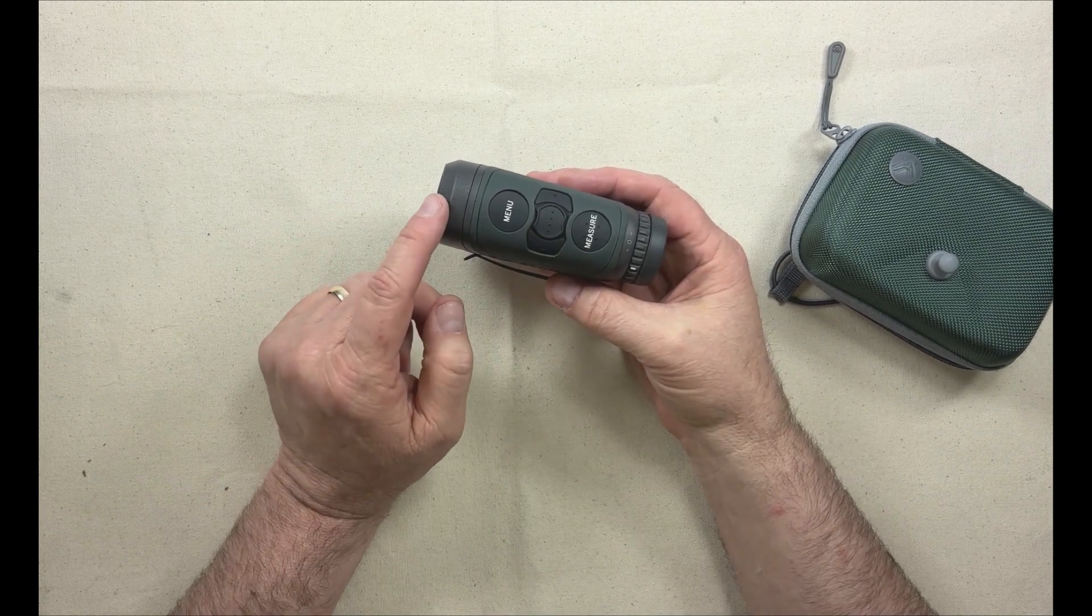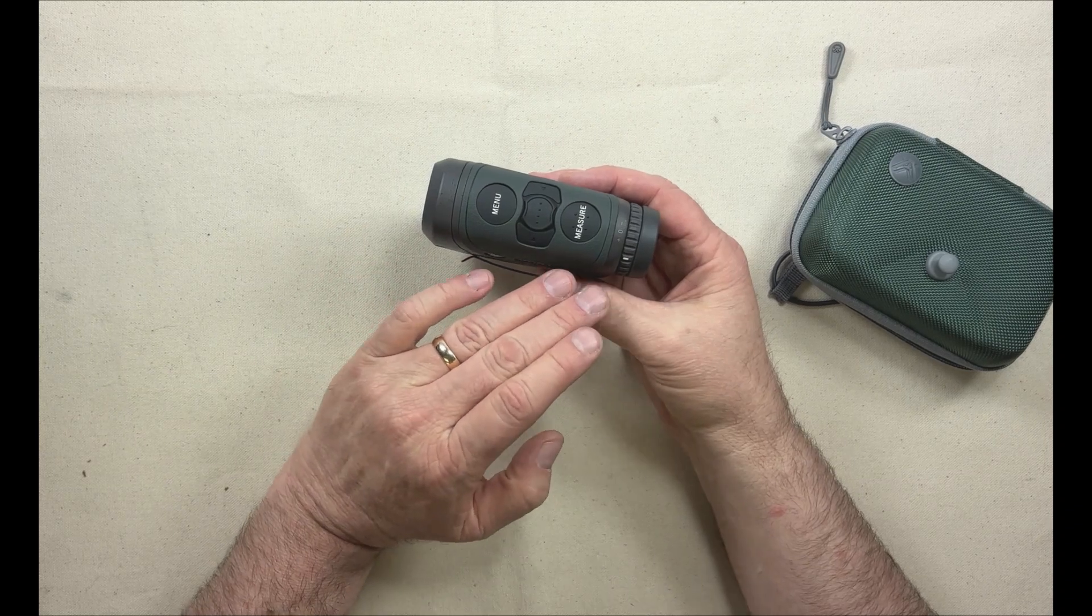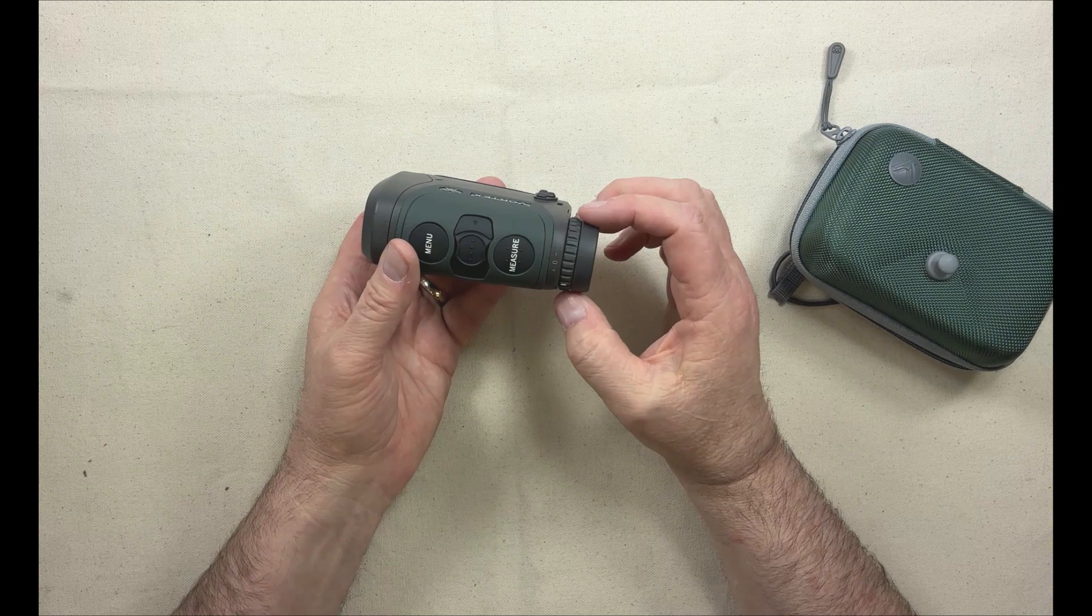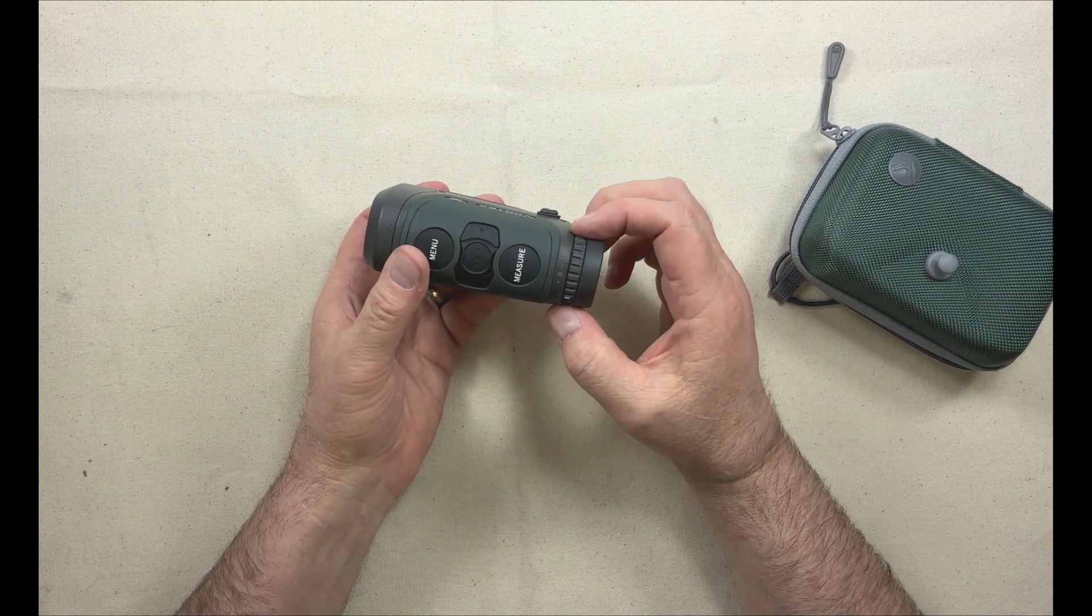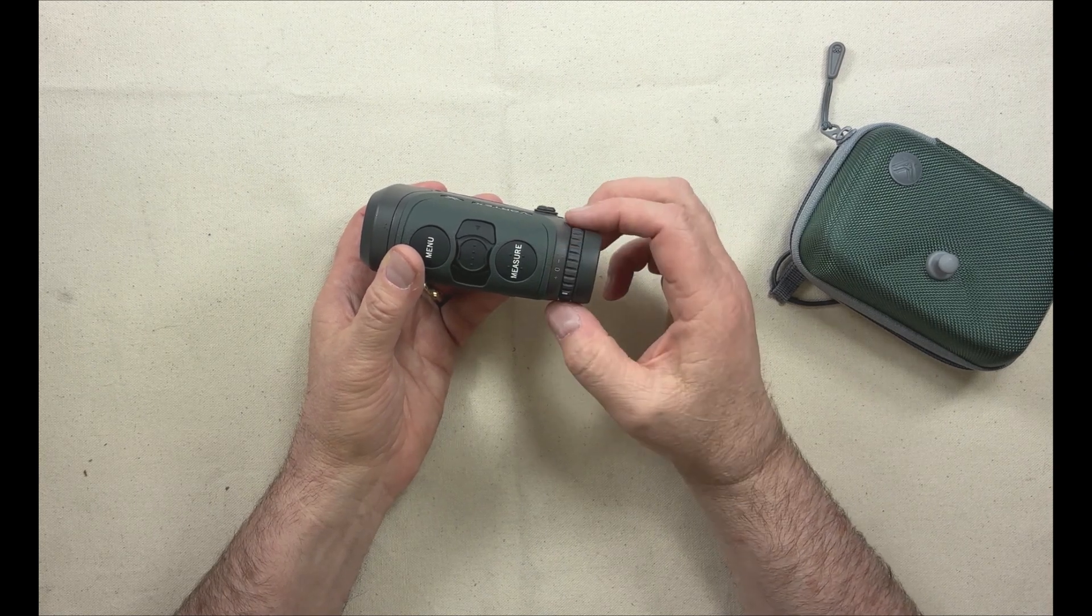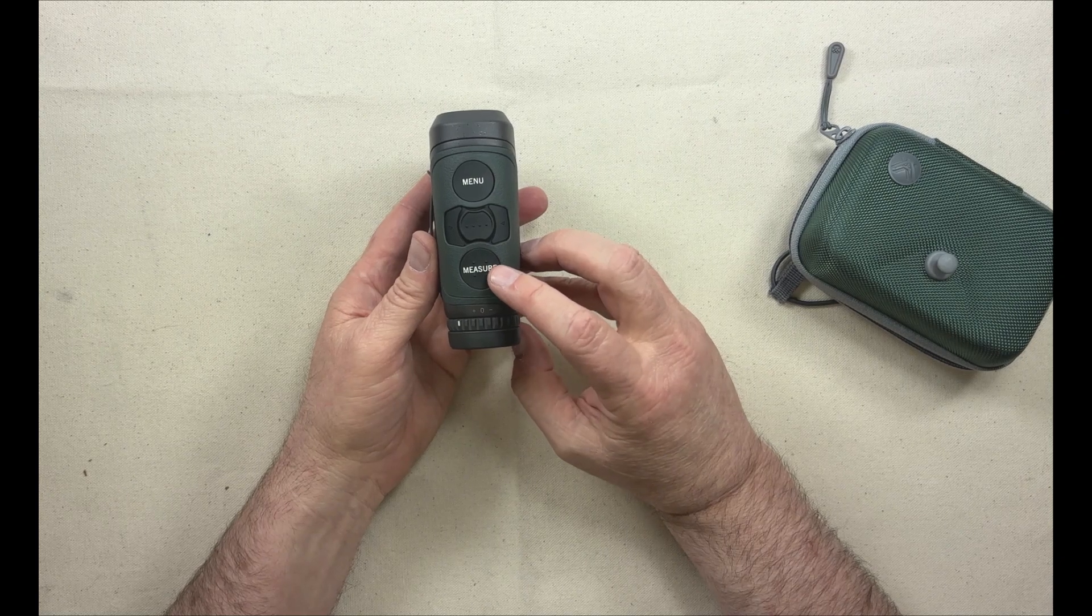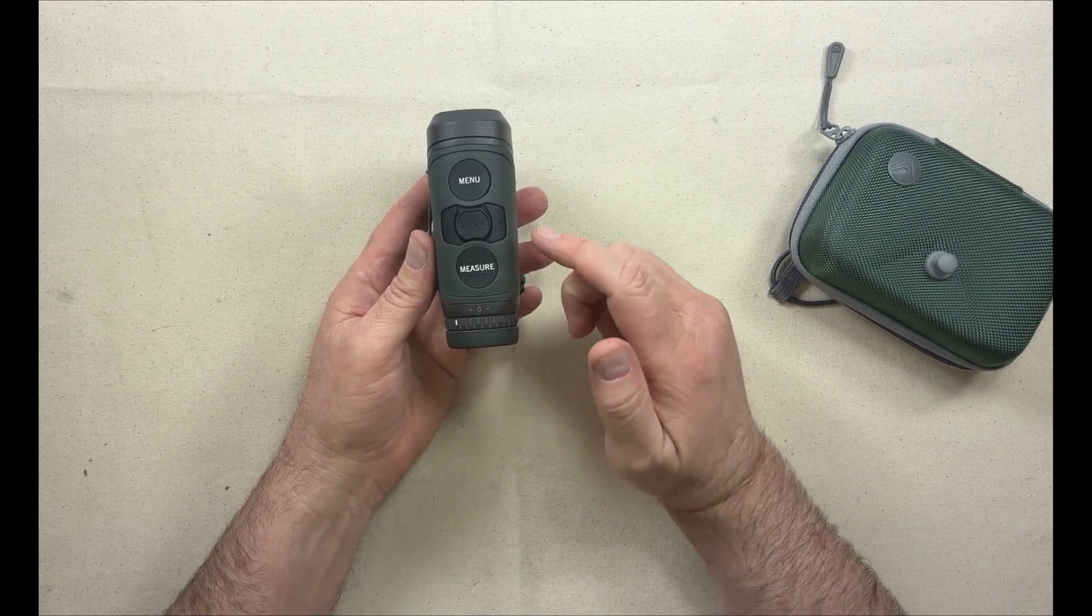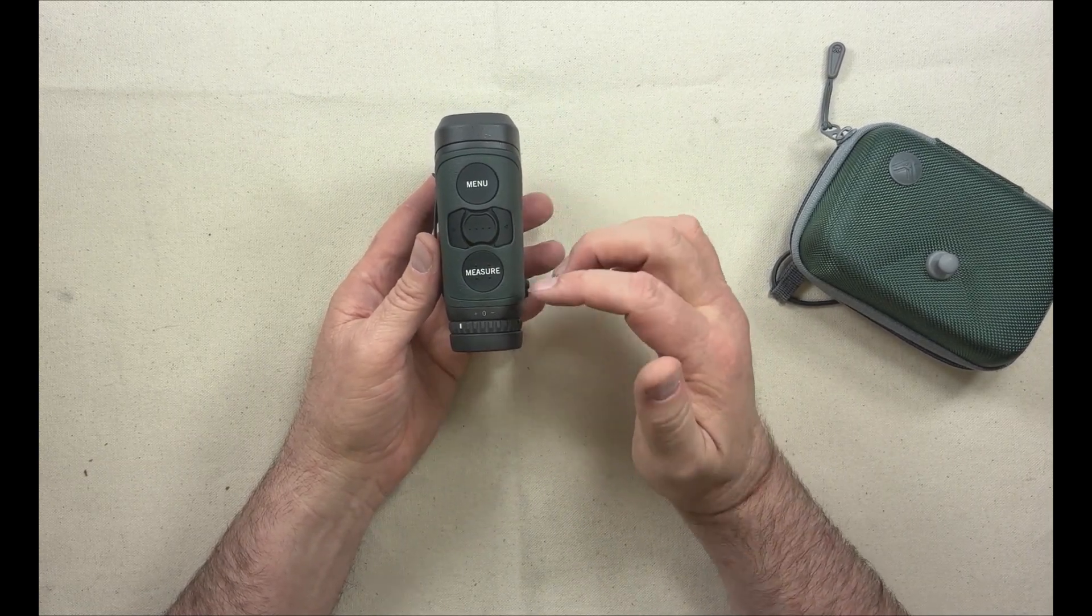It's a 7X magnification. Of course, it's a fixed magnification, as all range finders are. It does have a diopter focus right here. So when you put it up to your eye, if what you're looking at is out of focus, you can turn this. This is the button that activates the laser and sends it out, and then it shows up on the display inside here what the distance is.